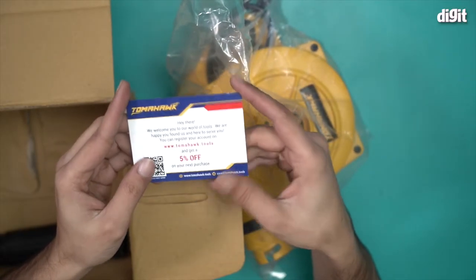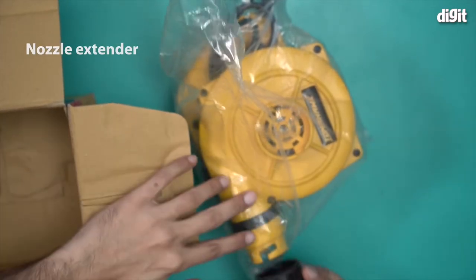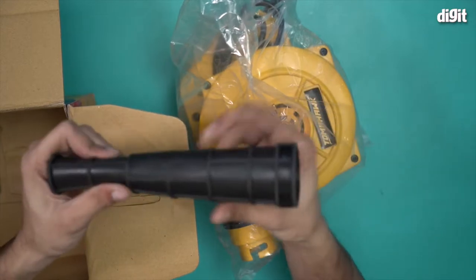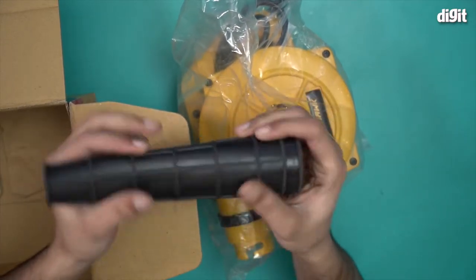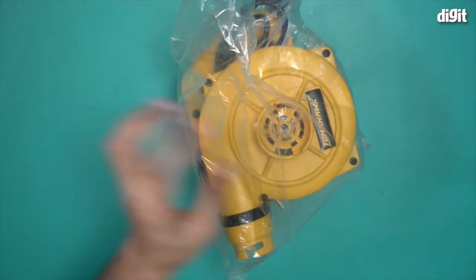This is the nozzle for the blower, which you attach at the front when you want to use it. This is made out of silicon material, very flexible and bendable as you can see. Now let's take a look at the blower itself.